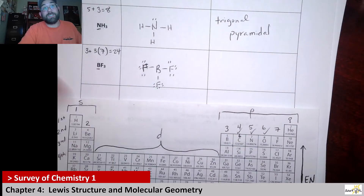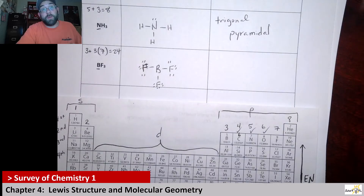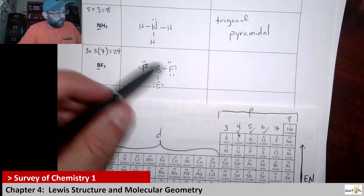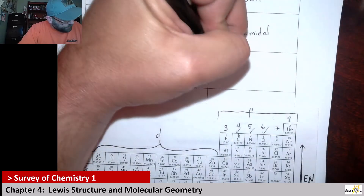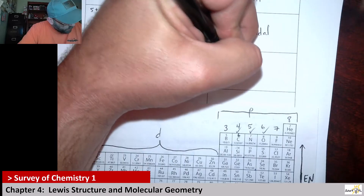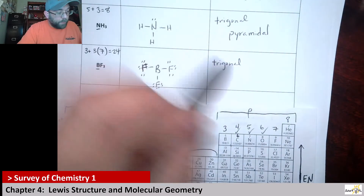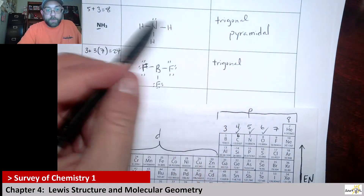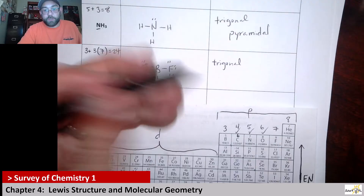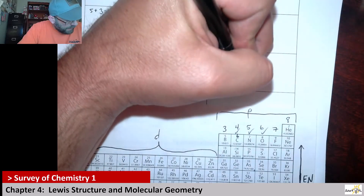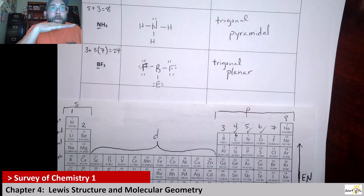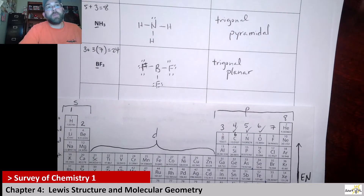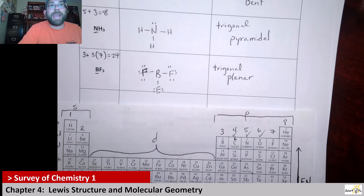It only has three domains, all three of them are bonds, and all three are equivalent because they're all with the same atom — fluorine. When you have three equivalent bonding domains, this is going to be trigonal planar. It's flat like a pancake — it only occupies one plane, that's why it's called planar.